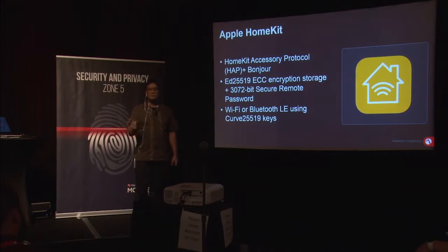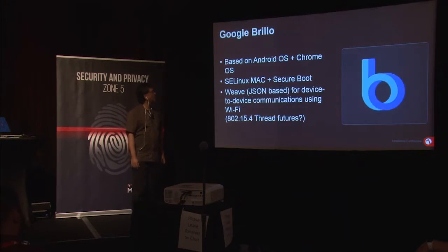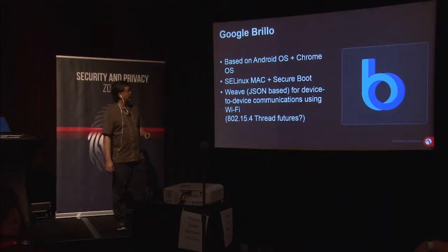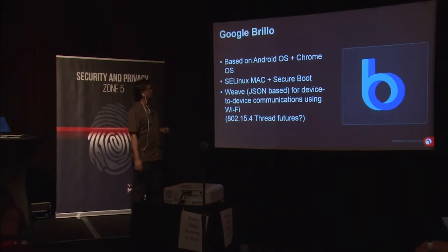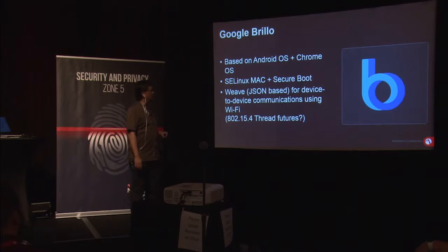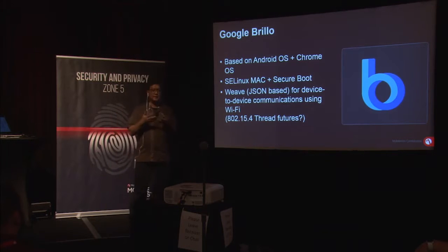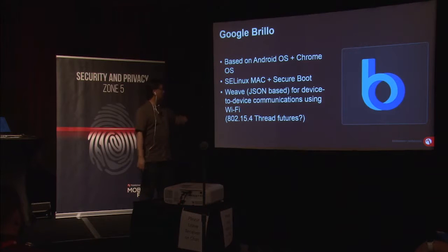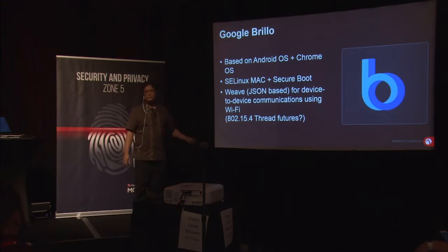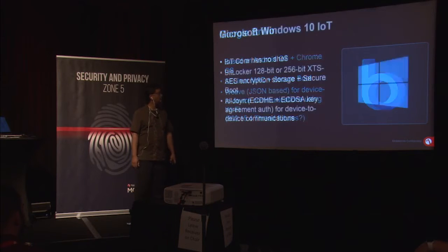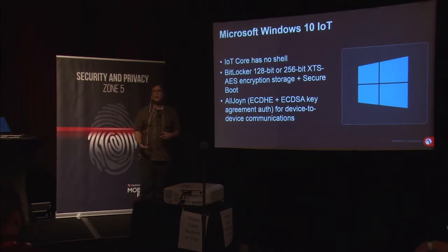On the Google Brillo side, it's based off Android OS and Chrome OS, built on SE Linux MAC and Secure Boot. It uses Weave for device-to-device communication — a JSON-based device communication over Wi-Fi. It can also do 802.15.4, which is basically Zigbee, or Bluetooth.